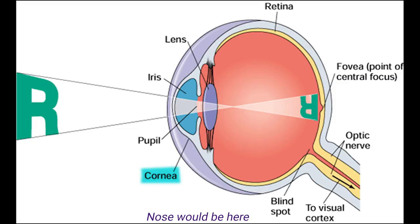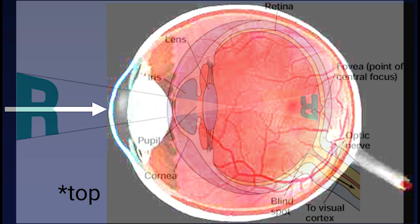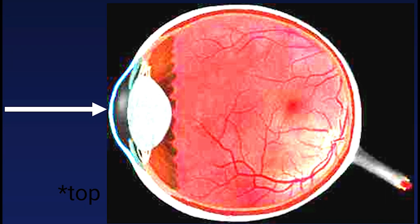Light coming in first passes through the cornea. This is the thin, transparent, outermost part of your eye. But it isn't just there for protection of the eye's inner squishy parts — it actually accounts for 80% of the eye's focusing power. If we look at an actual eye from the side, you can see the bulge in the front. It's a natural optical lens that's focusing light from the outside world.